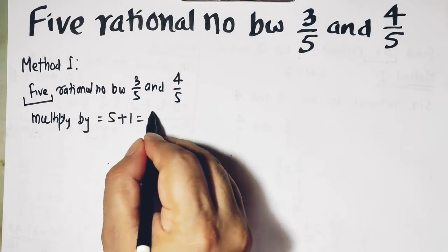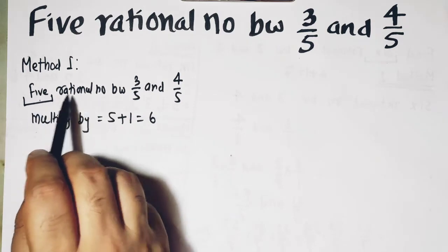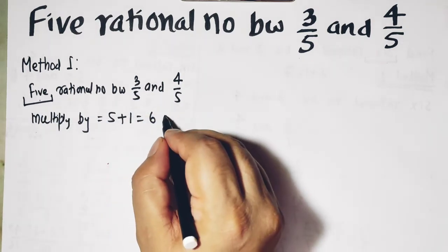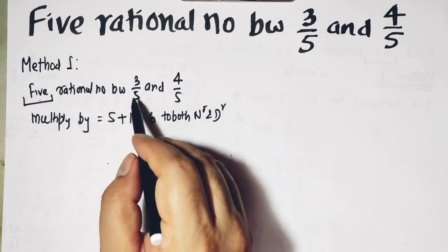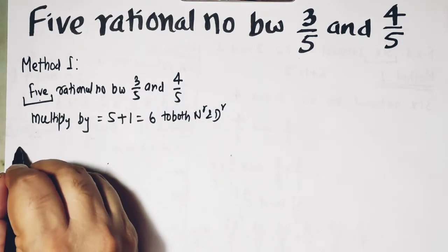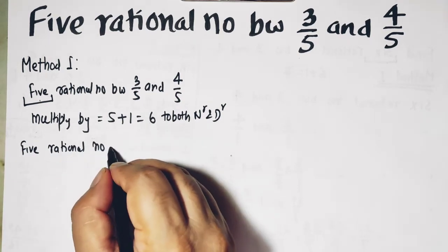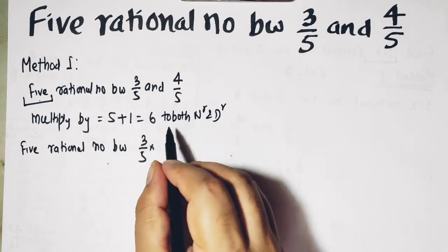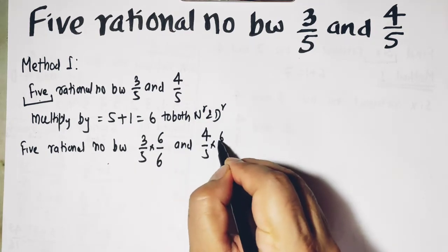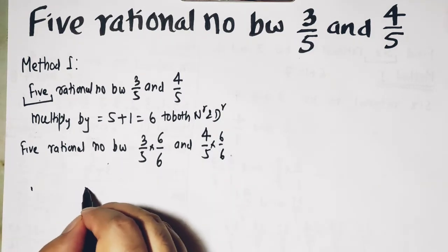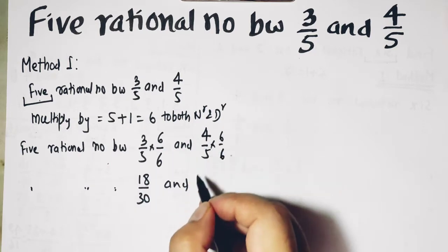This is method one. So we have to find 5 rational numbers between 3 upon 5 and 4 upon 5. Now keep in mind, whenever you have such questions when denominator is same and these numbers are consecutive, what you should do is multiply by 5 plus 1, which equals 6. So always keep in mind, we take one more than this number. If it is 5, we take 6. If we have to find 6 rational numbers, we take 7. Now we have to multiply by 6 to both numerator and denominator.